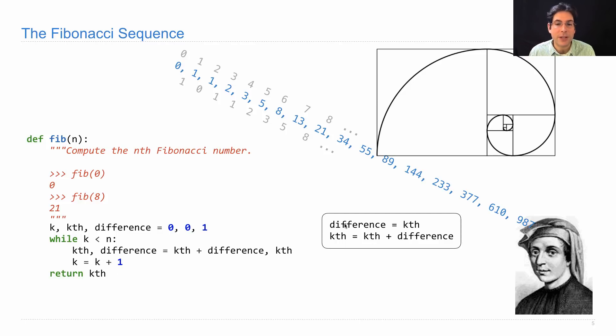In this version, we would change difference first and then we would add difference in. At the very beginning, the difference was one. We would change it to zero, then we'd say kth equals kth plus zero. And kth would stay the same. And everything would be zero forever.